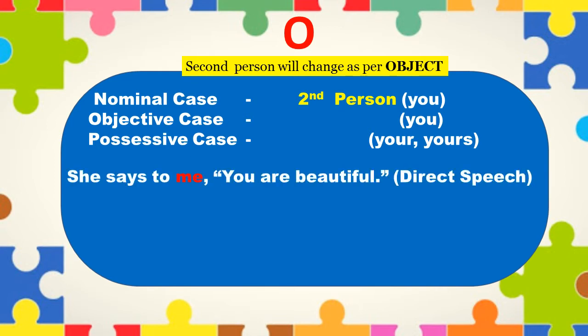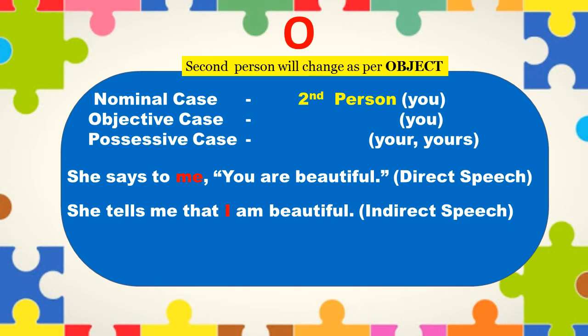Example: she says to me, 'you are beautiful.' As per rule number 2, the second person changes according to the object of the reporting verb. Here the object is 'me.' So in indirect speech, 'me' converts to 'I' and the sentence becomes: she tells me that I am beautiful. Here you can see 'you' is converted to 'I'.